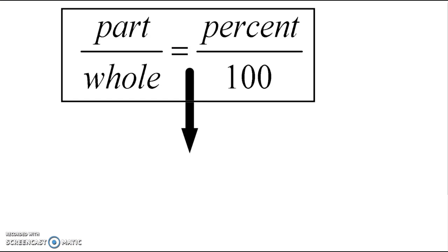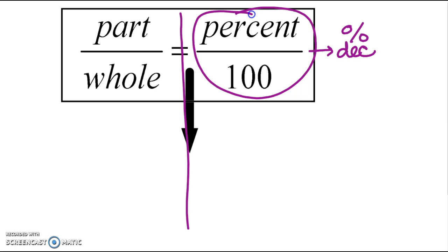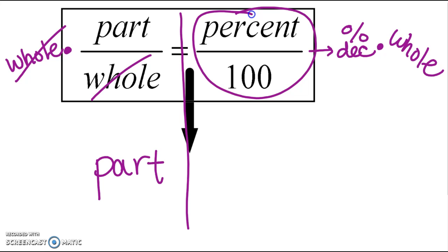This is your percent proportion that we used in the last section: part over whole equals percent out of 100. We're going to move things around and turn that into the percent equation. First, think of this percent instead of a whole number out of 100. When I have a percent divided by 100, I could just write this as a decimal. Then, like we learned in chapter 3, if I do the same thing to both sides, it stays equal. We're actually going to multiply by the whole on both sides. The whole and the whole cancel out on the left.